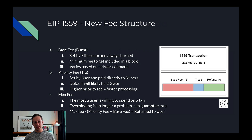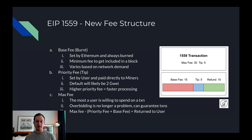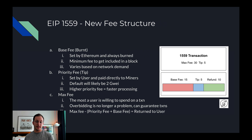It's estimated that the default tip will be 2 gwei, but it's worth noting that the more you're willing to spend on a tip, the faster your transaction will process. Lastly, there's the max fee that a user can set — that's the most they're willing to spend on a transaction. The max fee basically gets rid of the overbidding problem, because whatever isn't needed from that max fee gets returned to the user.